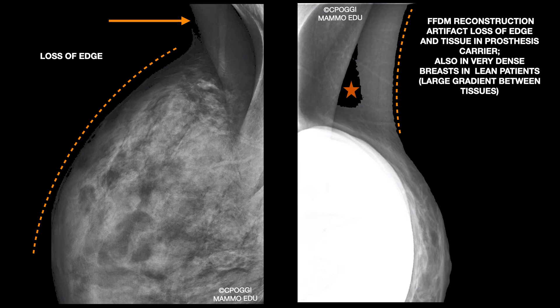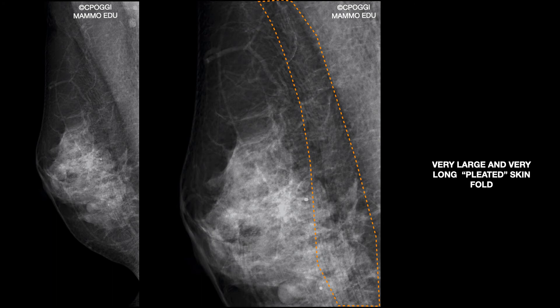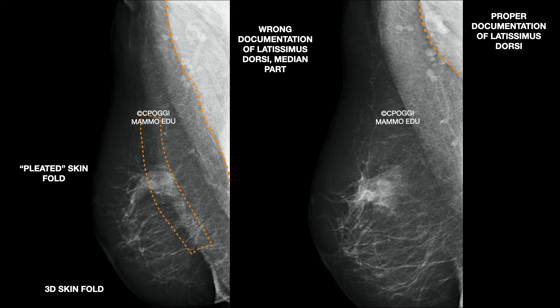It is a reconstruction artifact correlated to the dose delivered. Here is a very long pleated skin fold — here magnified — due to improper stretching of deep lateral tissues; the compression itself leads to a kind of accordion effect. Same problem, less important, with a huge 3D fold, both of them due to the wrong inclusion of the central part of latissimus dorsi. Alongside the repeated projection with the correct portion of latissimus, there is still a fold, but much smaller.